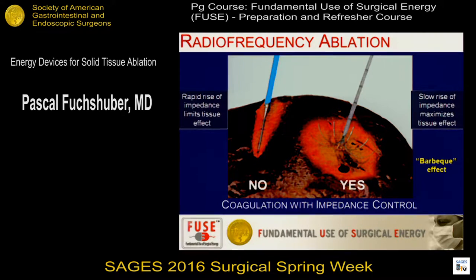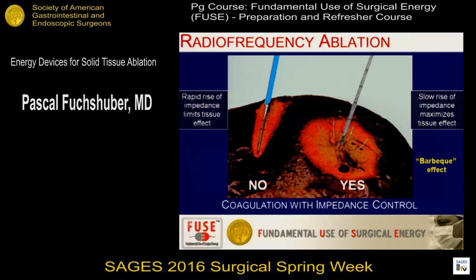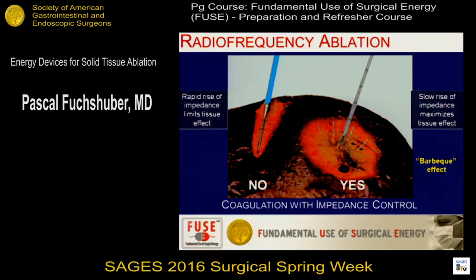The best way to illustrate it is this slide where on one side you're using a monopolar pencil, and as we all know, if you stick that in the liver and activate it, you get a very small coagulation zone — which really doesn't help very much in terms of ablating large tissue volumes. With radiofrequency ablation, our goal is to ablate large tissue volumes, and to do that, we want a slow rise in temperature to prevent the insulation that forms with the coagulum and carbonization.